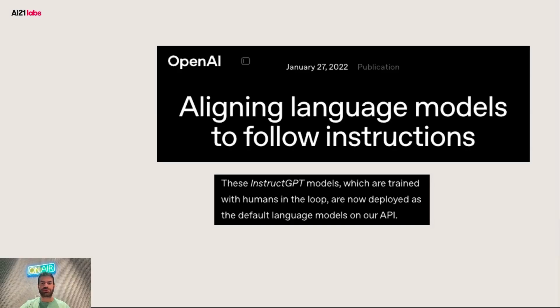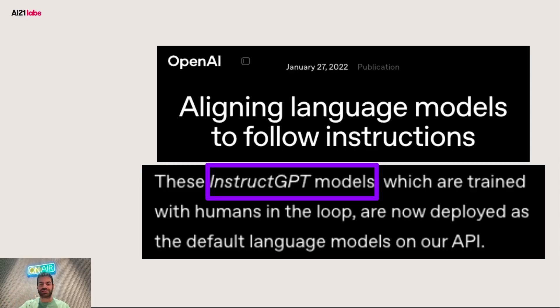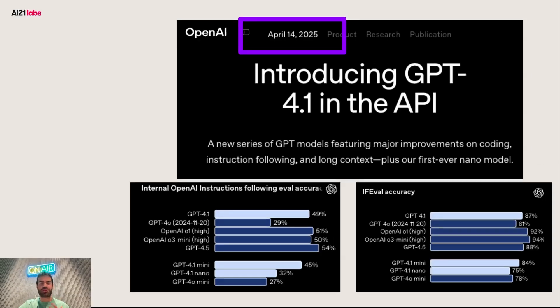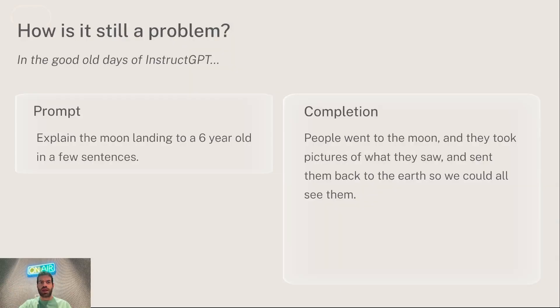The year is 2022. OpenAI just released InstructGPT, which is the first model that can take instructions and actually follow them, really do what you want it to do. They even called their model InstructGPT. So how come three and a half years later, in 2025, when they release InstructGPT 4.1, they still have trouble following instructions? And it's not just them. Every language model has some problems with following instructions. And why is that?